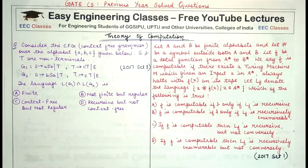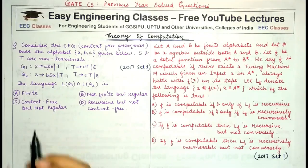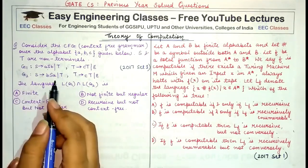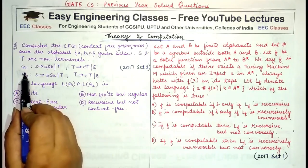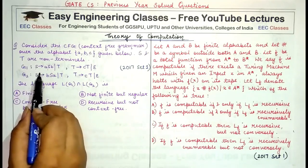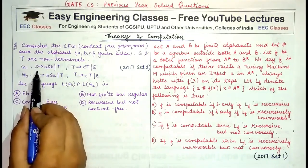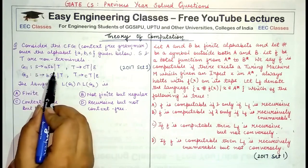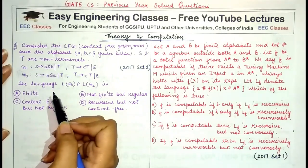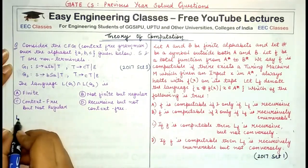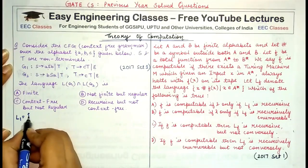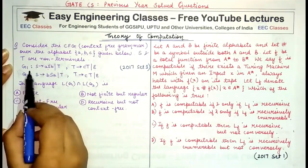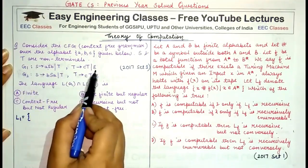The first thing we need to do is find the language generated by G1. Observing the grammar: S is the starting symbol. The type of strings generated — if L1 is the language of G1 — first of all, this grammar would generate lambda.